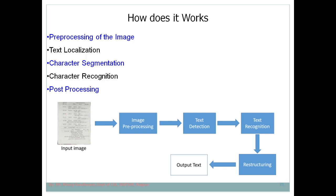Traditionally OCR was used for scanned documents such as books, where text appears in a uniform format with a specific font size. But in scene images, font size and lighting conditions vary greatly, making modern OCR very challenging — what was easy in earlier days is now quite difficult. That is why image processing is essential before further steps.